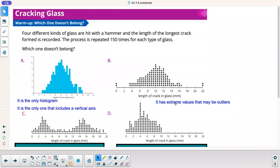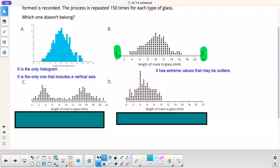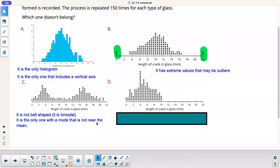Second one, it has extreme values that may be outliers. These values over here are potentially outliers because they're kind of far off from the rest of the data.